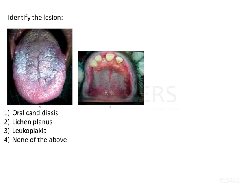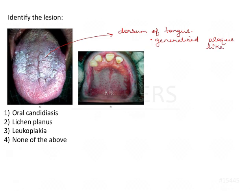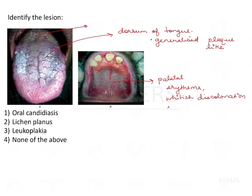Identify the lesion. We have two lesions depicted in the image — one on the dorsum of the tongue, which is a generalized plaque-like lesion present at the posterior one third. The second is a palatal lesion showing erythema, whitish discoloration, and spots.